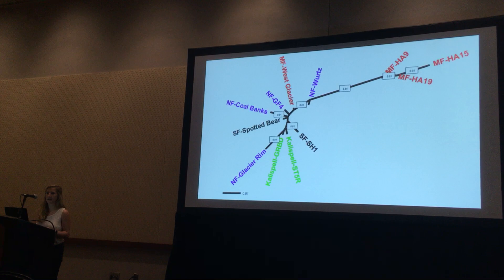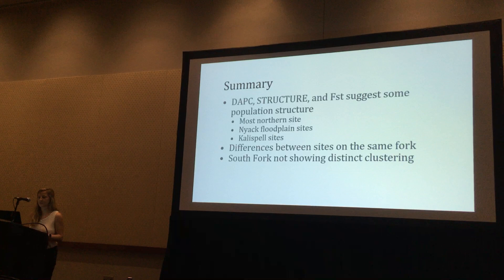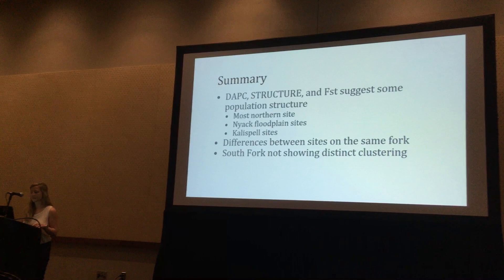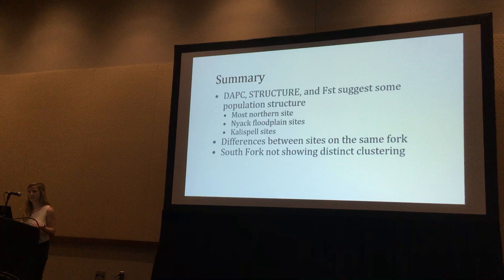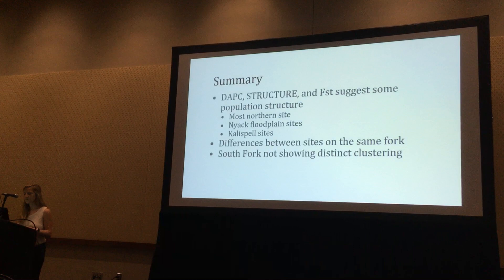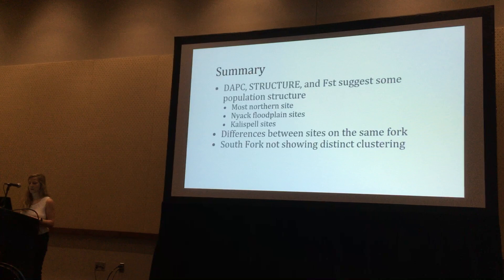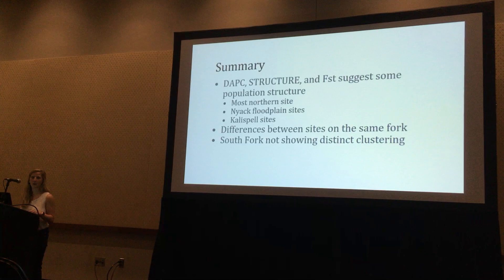To quickly summarize, the DAPC, STRUCTURE, and FST values are showing some population structure within these sites — specifically the most northern site along the North Fork, the Nyack floodplain sites along the Middle Fork, and the Kalispell sites, which is the city after all three forks have combined. Interesting findings we're hoping to investigate further include differences between sites along the same fork, which we weren't expecting, and also why the South Fork isn't showing distinct clustering when those populations seem to be quite geographically isolated.